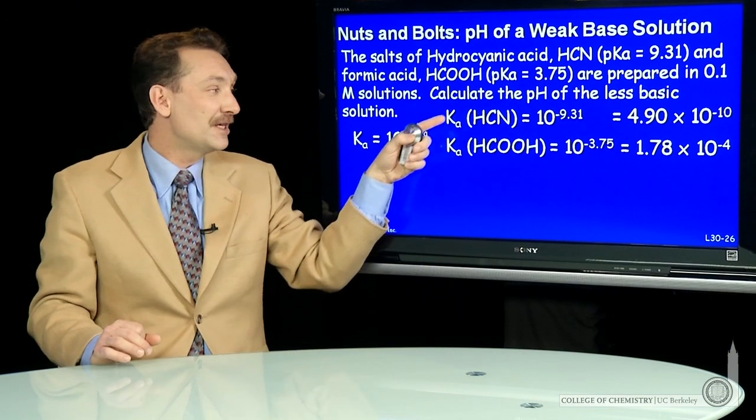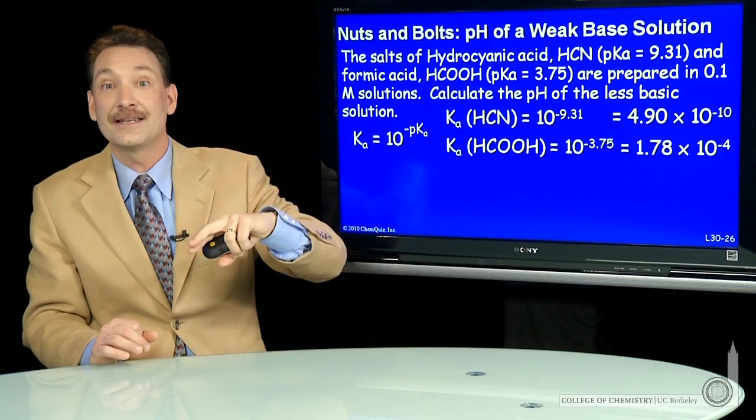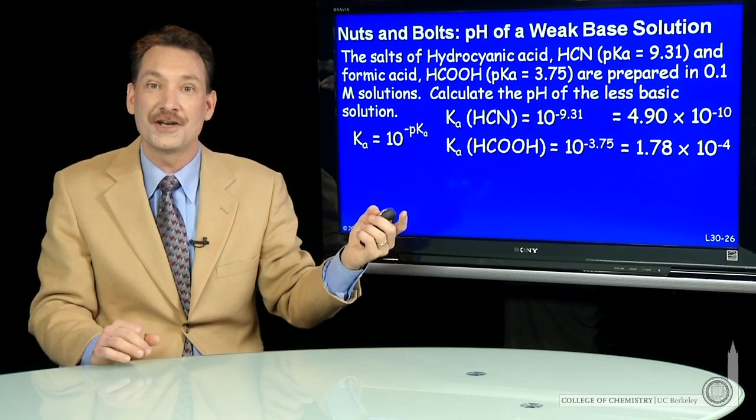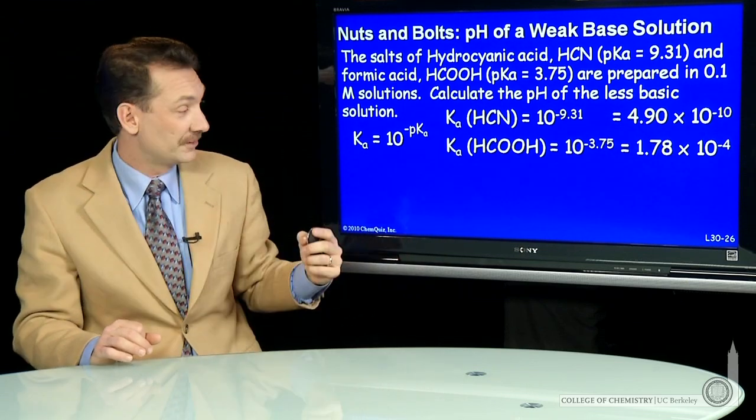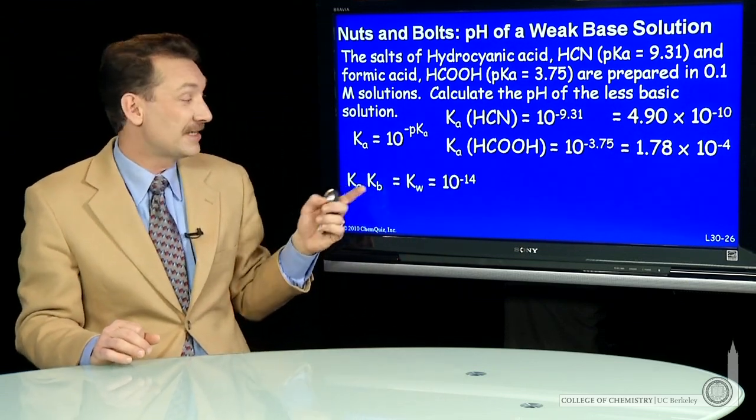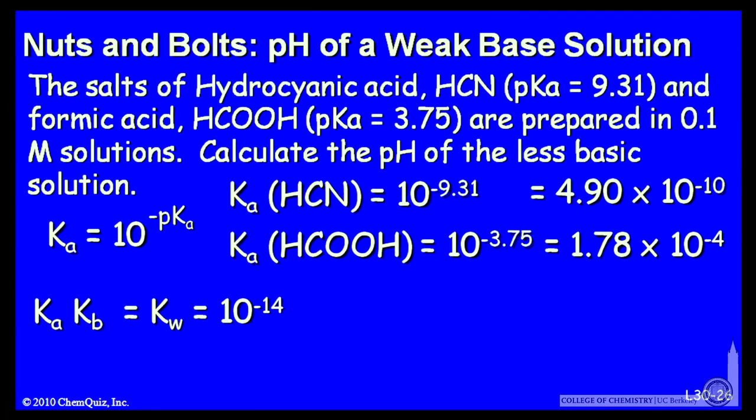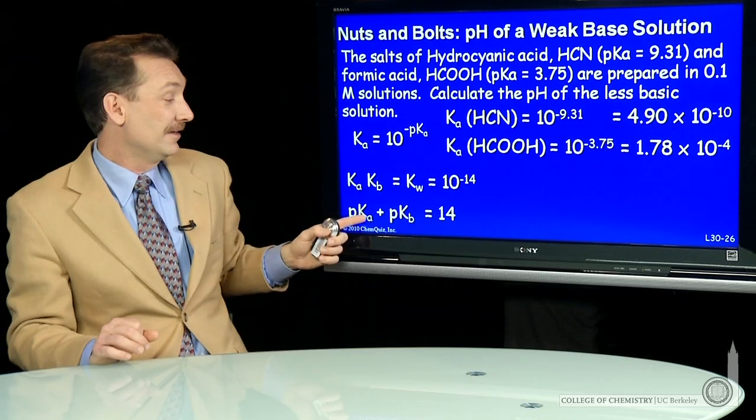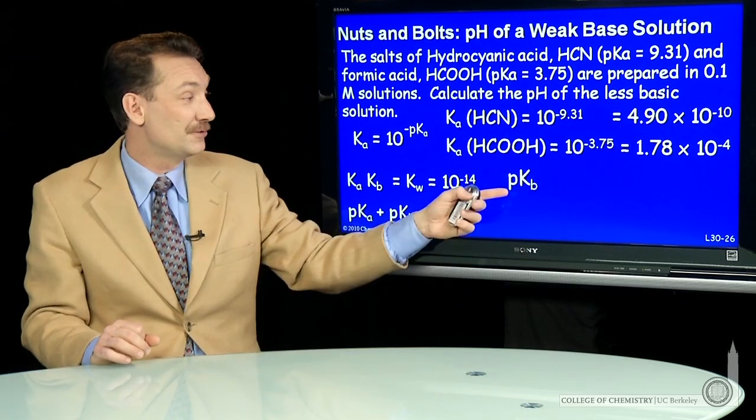And now from those equilibrium constants, Ka and Kb, I can get the conjugate base, the Kb's, the equilibrium constants for their conjugate bases or their salts. I can do that because Ka times Kb is Kw. So Ka times Kb is always 10 to the minus 14th for any acid or base. And if I take minus log of that expression, I get pKa plus pKb is 14. So I can easily then take the sum. If I know Ka, I can quickly calculate Kb. So let's do that.